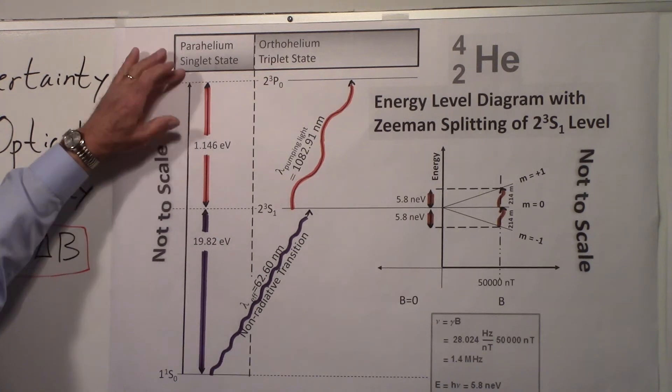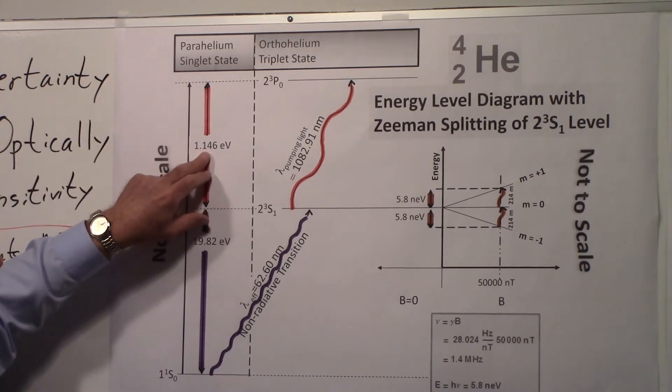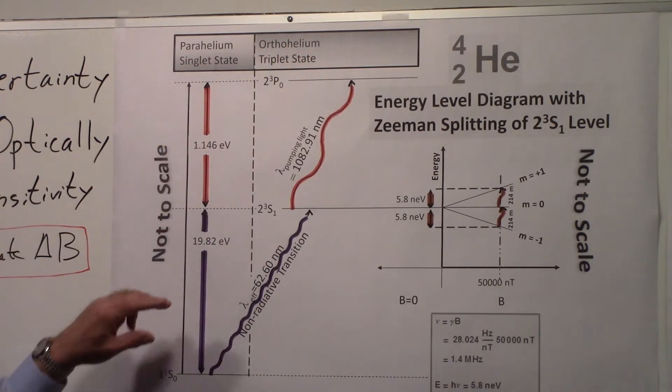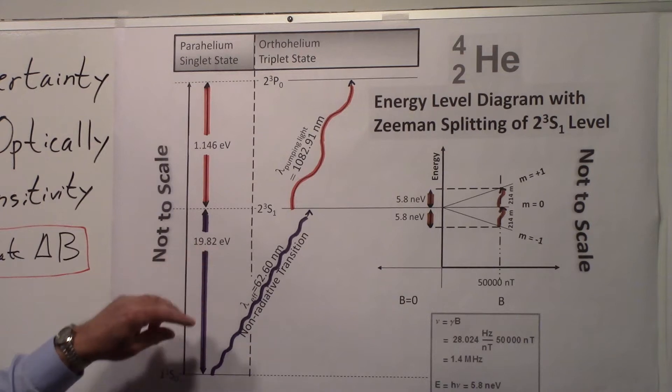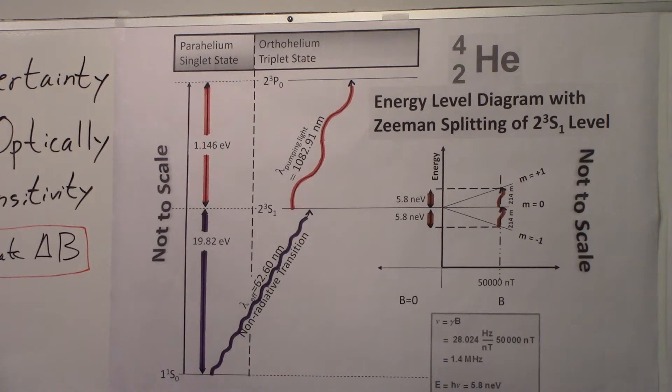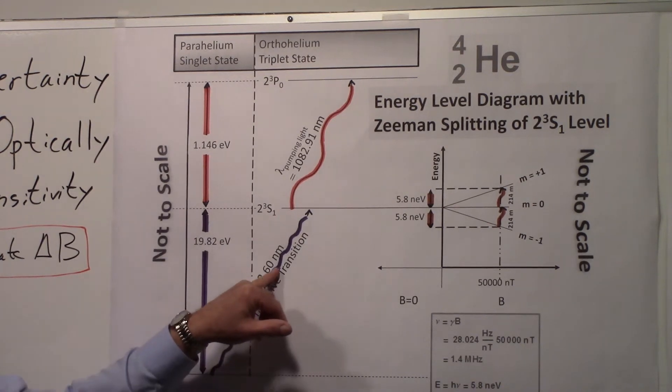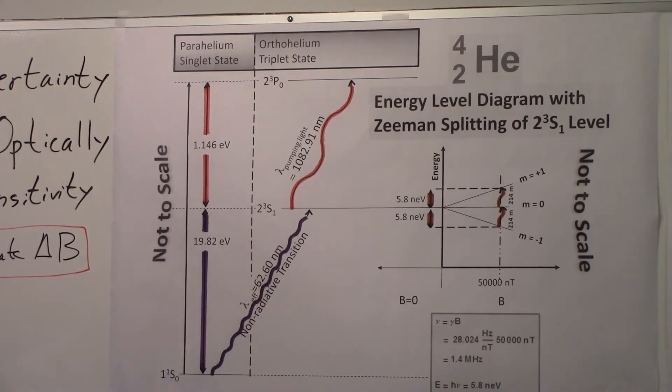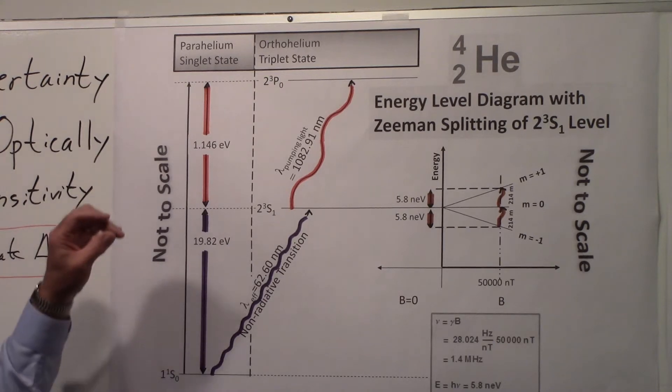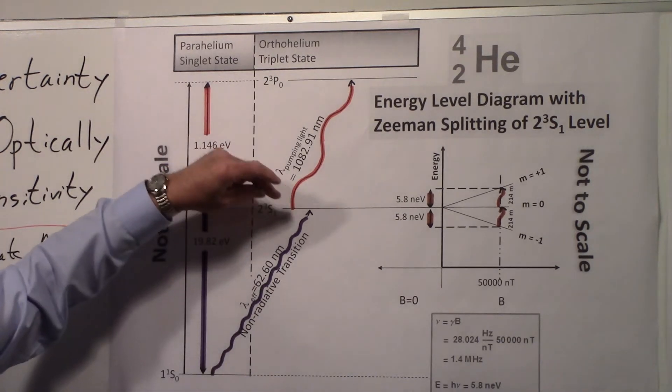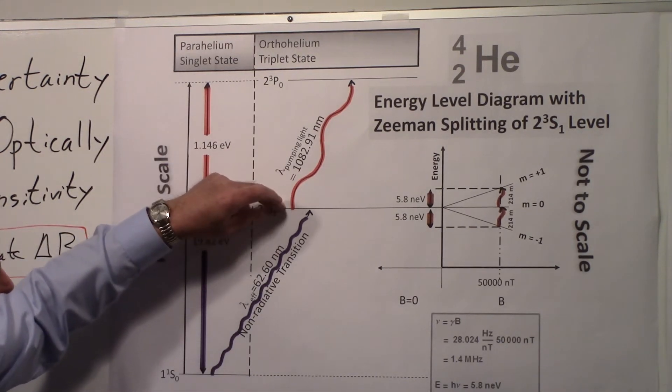I'm showing here the energy level here is 1.146 eV and that corresponds to this wavelength of light. And down here, it was 9.82 eV getting from the ground state in the singlet state to the triplet state. If that was a radiative transition, the wavelength would be 62 nanometers, which puts it into the extreme ultraviolet. But as I said, it's a non-radiative transition. So we rely on the collisions of the helium atoms in the cell to get to this level.